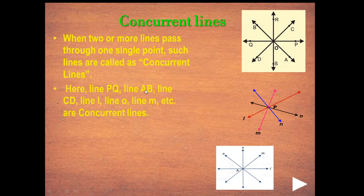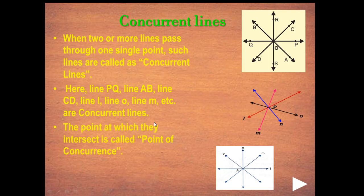Lines PQ, AB, CD, and others that pass through a single point are concurrent lines. The point at which these lines intersect is called the point of concurrence. In the first diagram, the point of concurrence is point O. In the second diagram, it is point P. In the third diagram, it is point A.